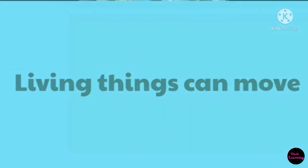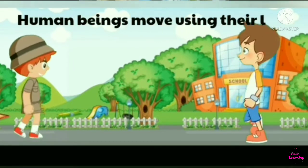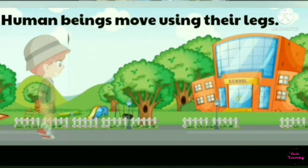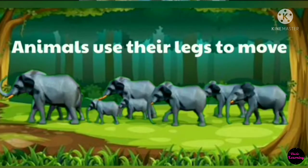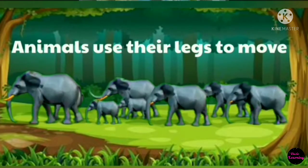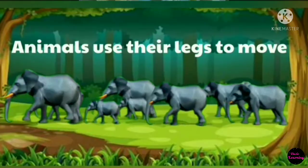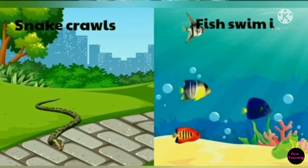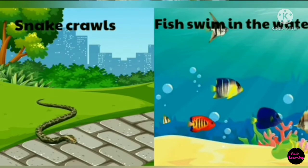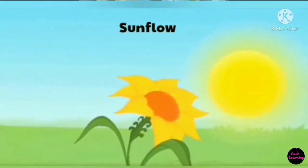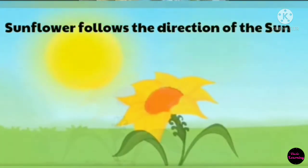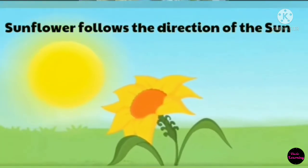Living things can move. Human beings move using their legs. Animals also use their legs to move. Animals without legs crawl, slide, or swim using their body. Plants also show some movements, like the sunflower follows the direction of the sun.